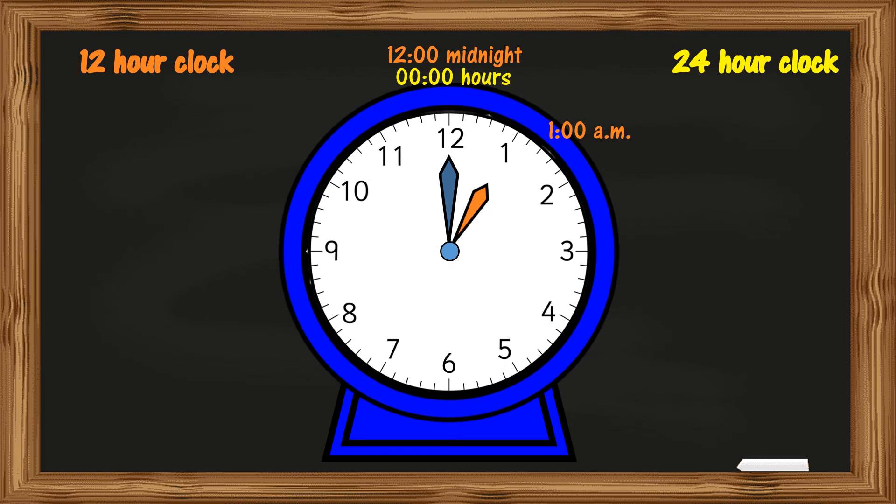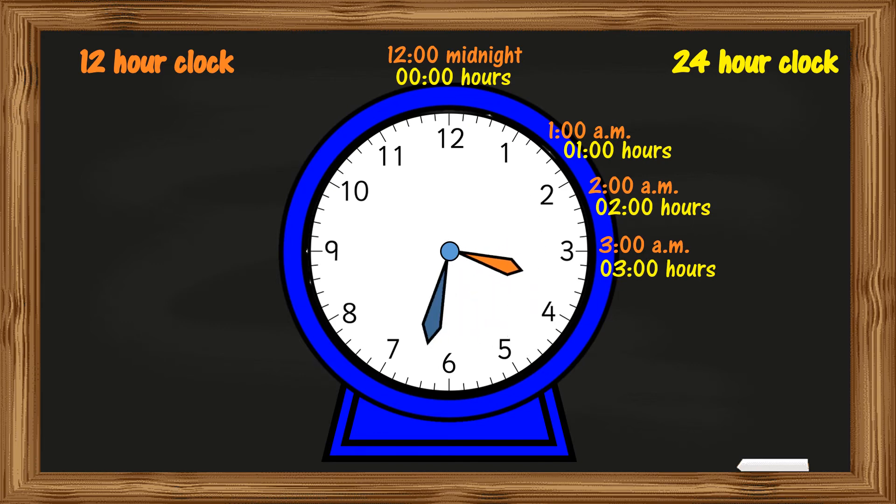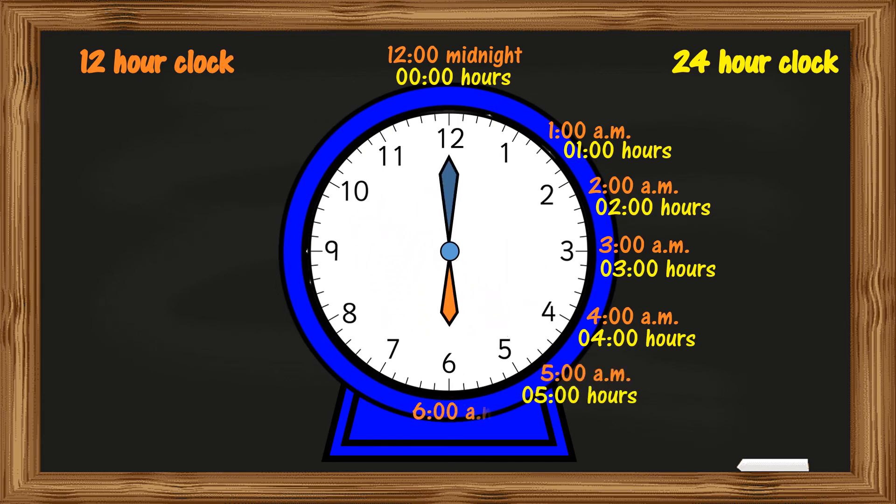1am is written as 0100 hours. 2am is 0200 hours. 3am will be 0300 hours. 4am is 0400 hours. 5am 0500 hours.